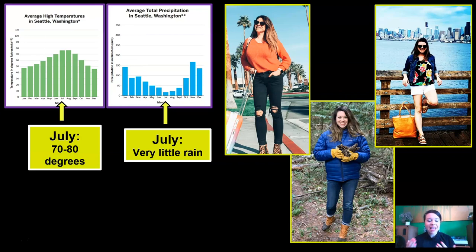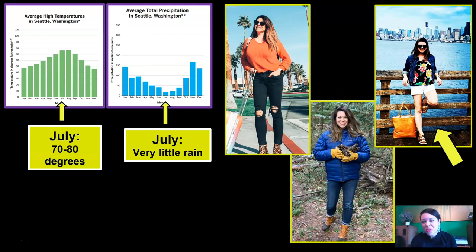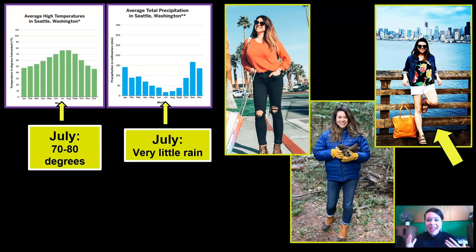Take a look at these three pictures and compare them to the weather I can expect on my 40th birthday. Pick an outfit that you think looks right. The outfit with the orange sweater is probably a little too heavy and too warm for 70 to 80 degrees. The outfit on the bottom is way too much for July — we're not expecting rain, so I can leave the rain boots and raincoat at home, and I won't need gloves and a heavy coat. So this outfit is actually the best one for me to wear.